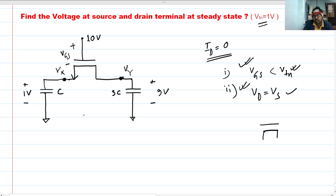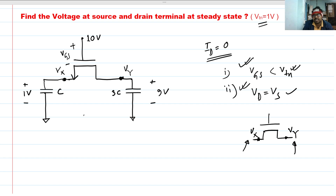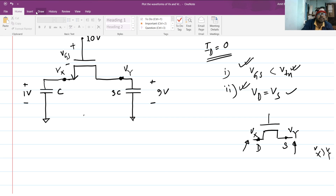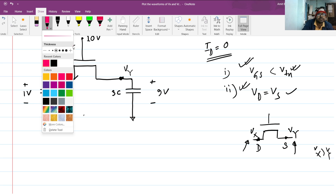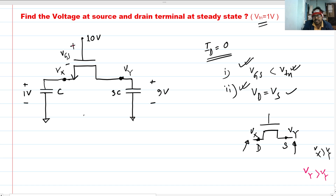If this is a MOSFET, we know that the two terminals can be interchanged — let's say vx and vy. This terminal can be source and this can be source as well, depending upon the potential at the node. If vx is greater than vy then this terminal is drain and this is source. When vy is greater than vx then this terminal will be drain and this terminal will be source.